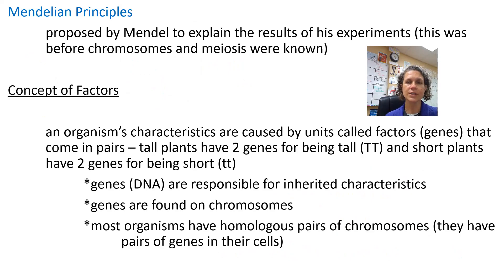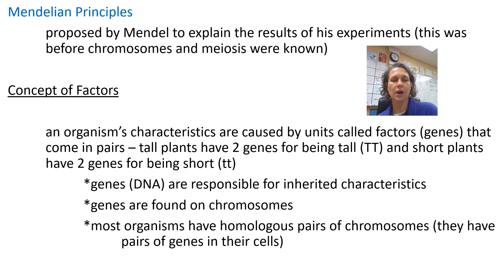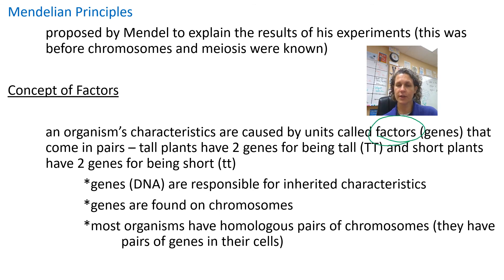Gregor looked at these results and came up with the basis for genetics. He proposed four different concepts. First, an organism's characteristics are caused by units that he called factors — we call these genes. That's about the only thing we would have changed. He said these factors come in pairs.